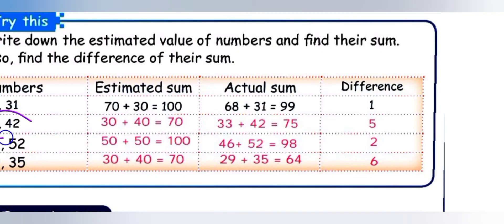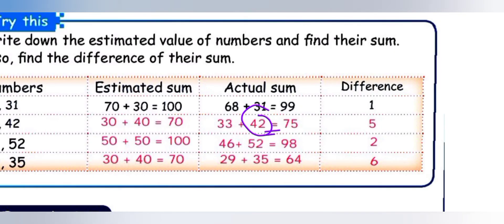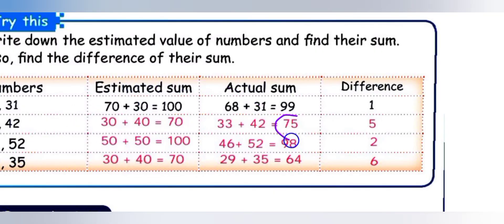Next: 33 plus 42. Actual sum is 75. Estimated: 33 — ones place 3 is less than 5, so 3 tens stays 30. 42 — ones place 2 is less than 5, so 4 tens stays 40. Estimated sum: 30 plus 40 equals 70. Difference: 75 minus 70 equals 5.